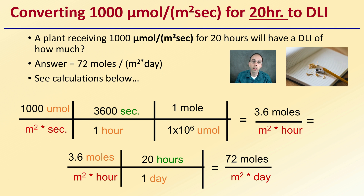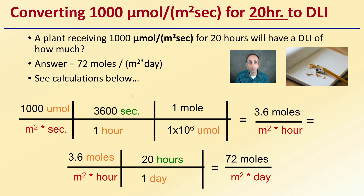Here's a calculation example: a plant receiving 1,000 micromoles per meter squared per second for 20 hours will have a DLI of 72 moles per meter squared per day. Starting with the output of 1,000 micromoles per meter squared per second, we convert to hours using 3,600 seconds per hour, then convert micromoles to moles, giving us 3.6 moles per meter squared per hour. Multiplied by 20 hours per day, we get 72 moles per meter squared per day.